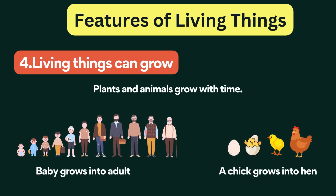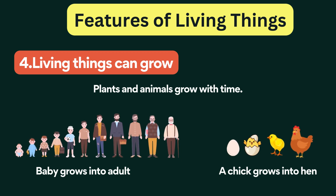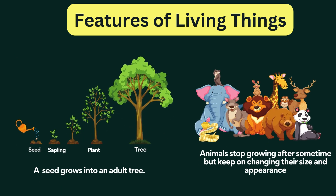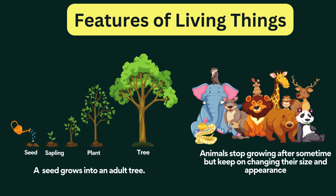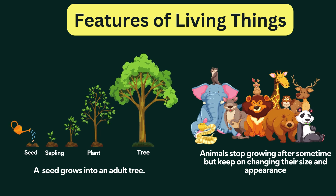Living things can grow. All living things are born small, but as time passes they become bigger. Human beings grow from a baby to an adult. A chick hatches out of an egg and then grows into a hen or rooster. A seed grows into an adult tree. Animals stop growing after some time, but keep on changing their size and appearance.